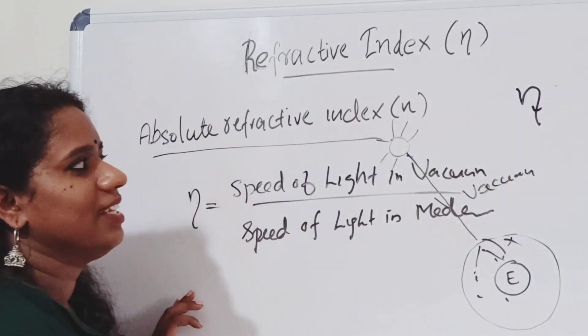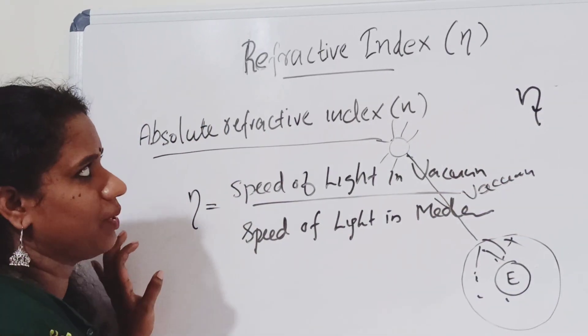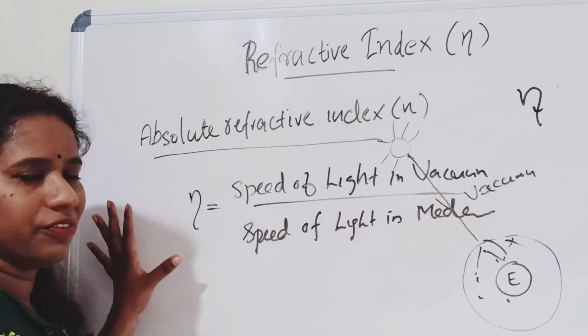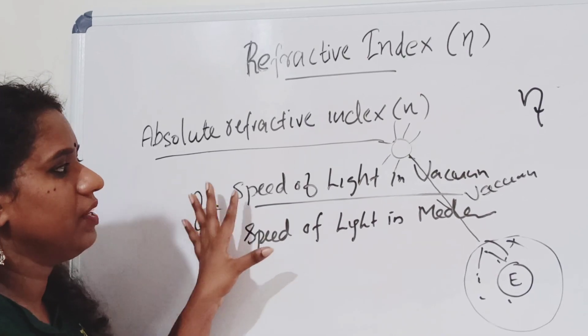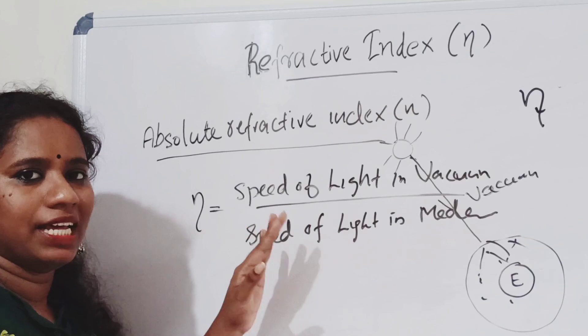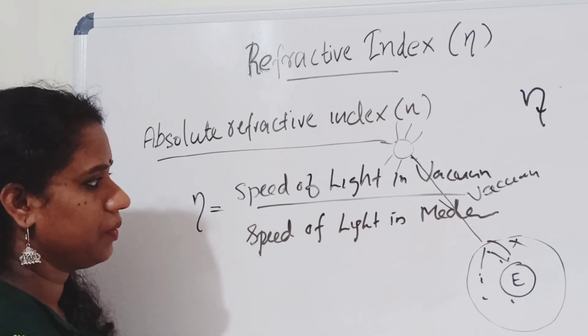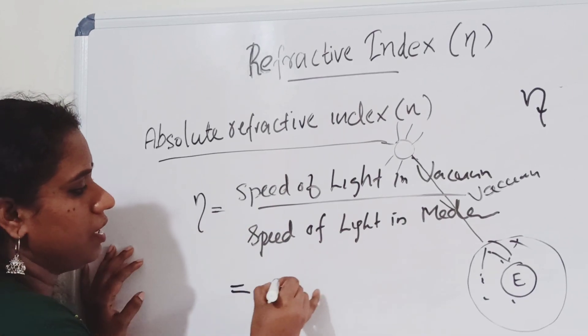The absolute refractive index means it is the speed of light in vacuum to the speed of light in the medium.